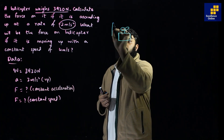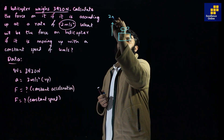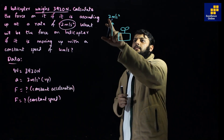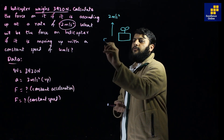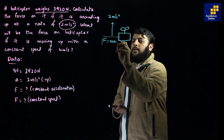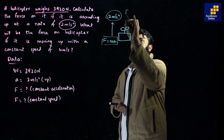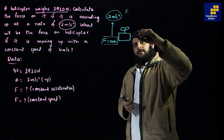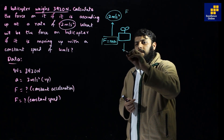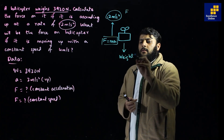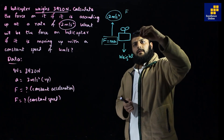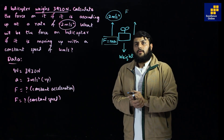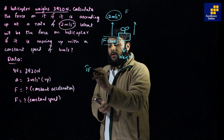The helicopter is ascending at a rate of 2 meters per second squared. According to Newton's law, whenever there is acceleration there has to be a net force — the formula is F = ma. Since the helicopter is going up, weight acts downward, and there must be a force that balances the weight plus an additional force to produce the acceleration.